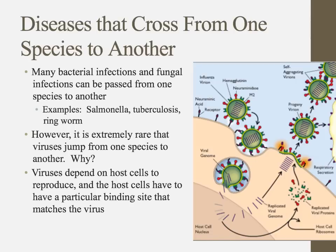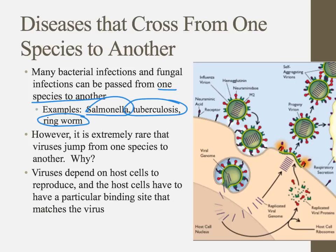Let's talk about the spread of diseases. Within a species, like John giving a cold to Mary, it's no problem. But passing a disease from one species to another is really tough. Some classic examples of diseases passed between species include salmonella, tuberculosis, and ringworm — these are all bacterial and fungal diseases. Bacteria and fungi aren't as picky, as we'll discuss.